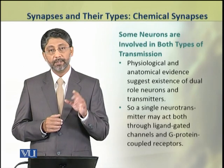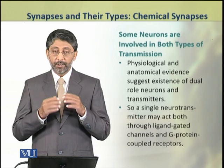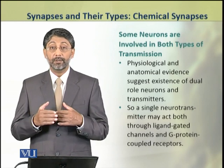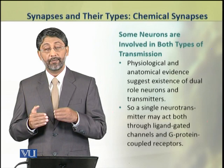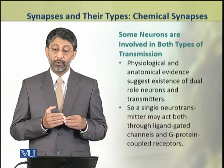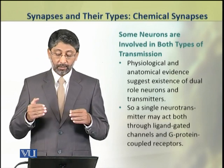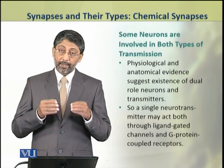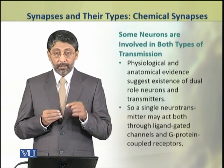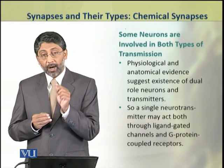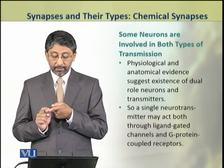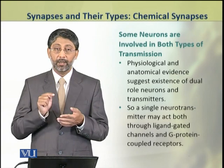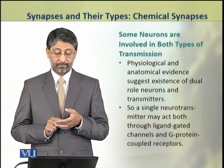There are some neurotransmitters which are involved in both types of transmission — fast as well as slow. A single neurotransmitter can act on both ligand-gated ion channels and G-protein coupled receptors.